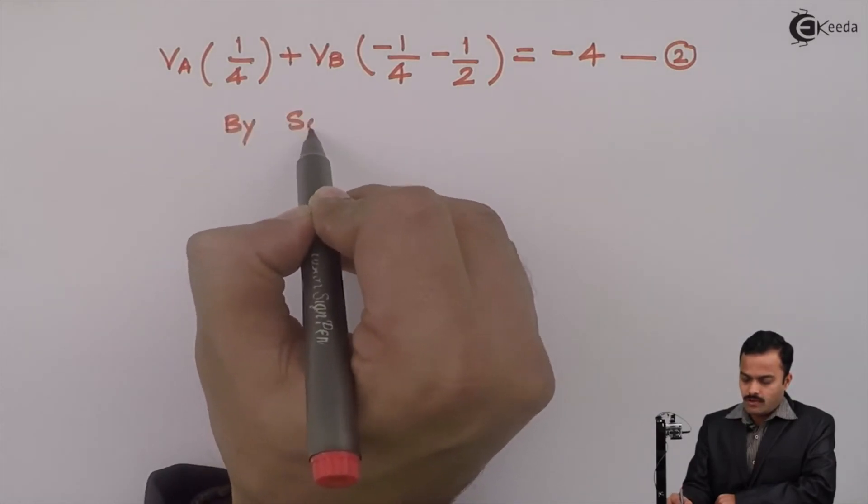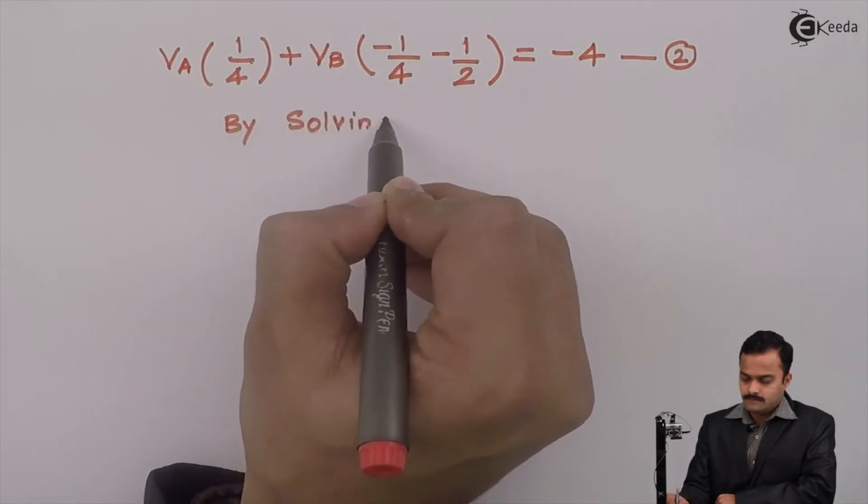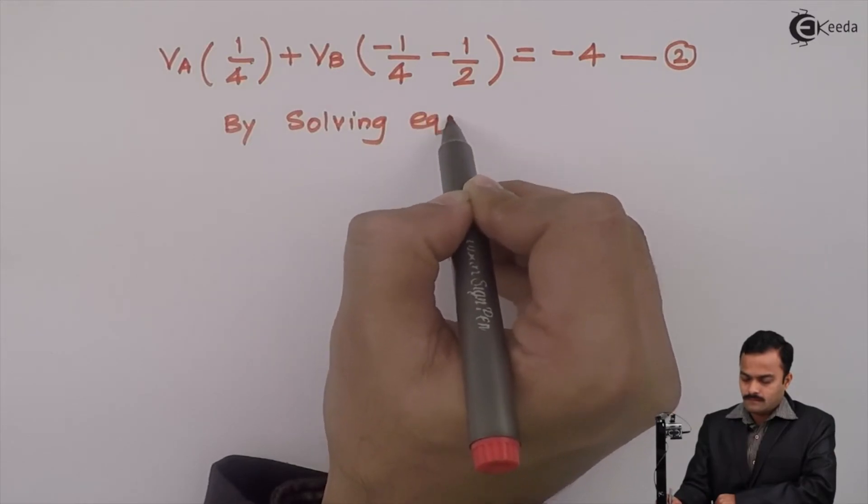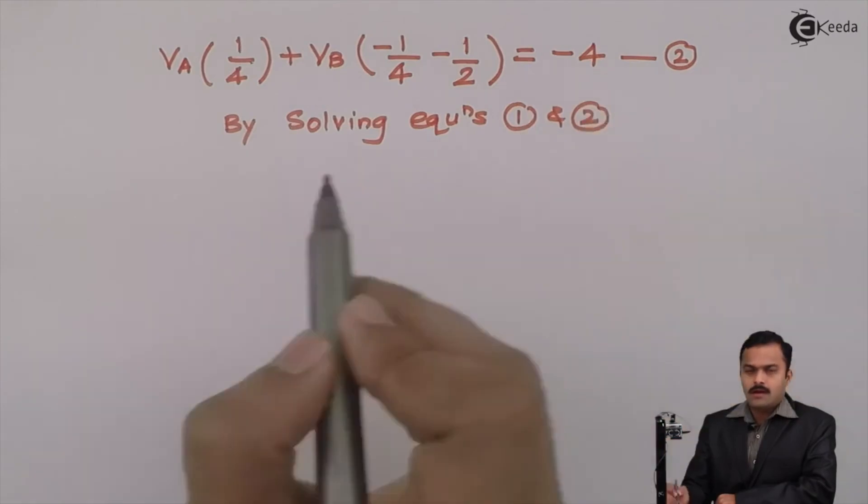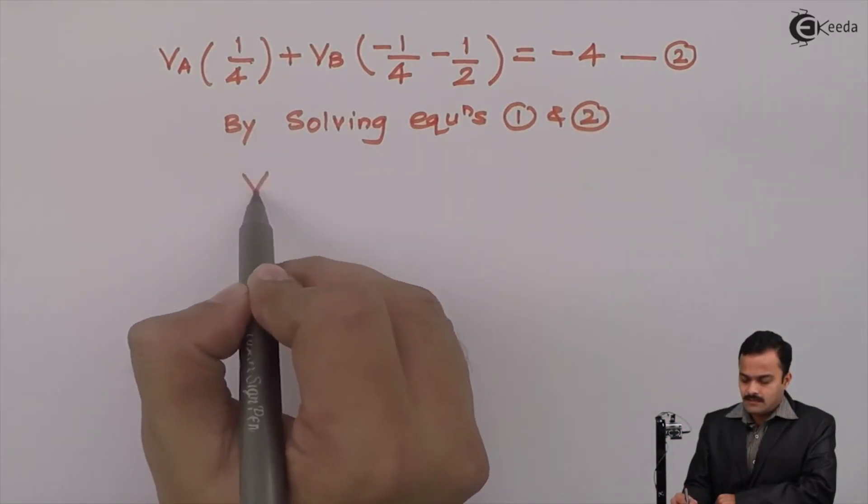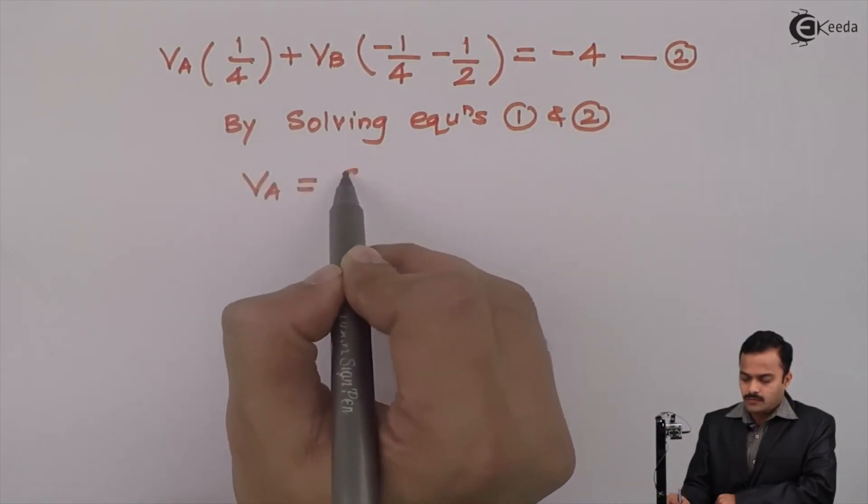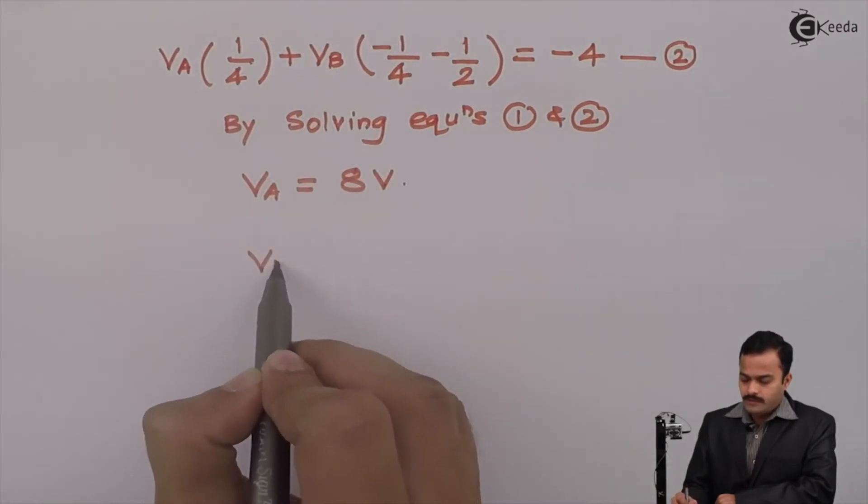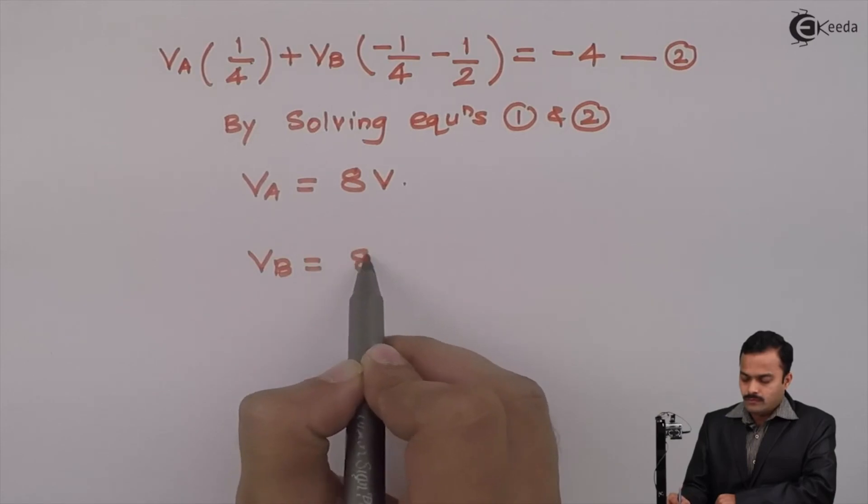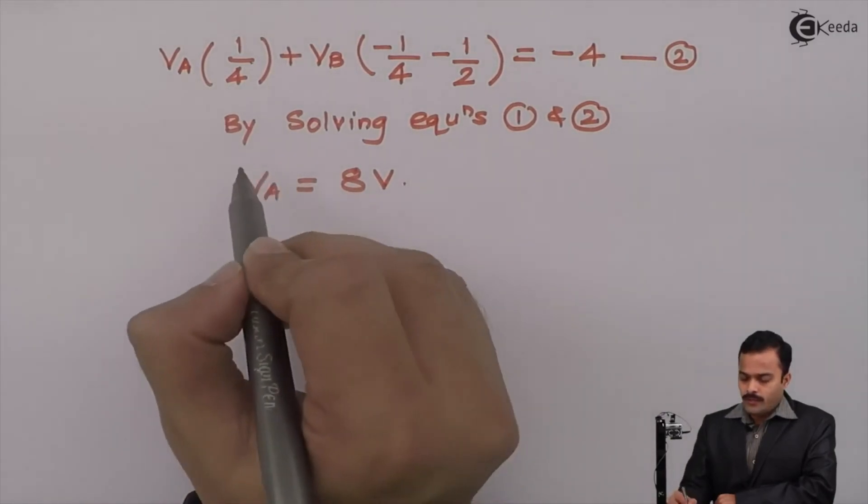So by solving equations 1 and 2 I will get answer VA equal to 8 volt and VB also equal to 8 volt. So VA and VB are nothing but potentials of node A and node B.